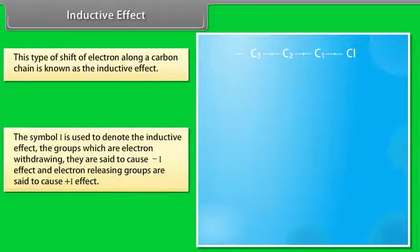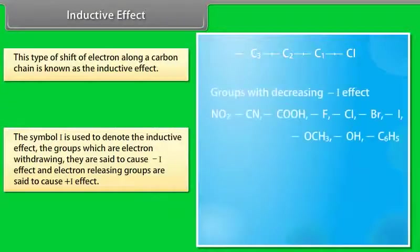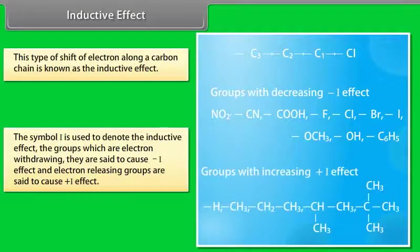The symbol I is used to denote the inductive effect. Groups that are electron-withdrawing are said to cause a negative I effect, and electron-releasing groups are said to cause a positive I effect.